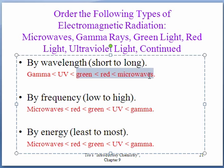By frequency, lowest frequency to high, so it's going to be opposite of this. Lowest frequency is going to be the longest wavelength, which is microwaves, then red, then green, then ultraviolet. And then the highest frequency is going to be the shortest wavelength, gamma.